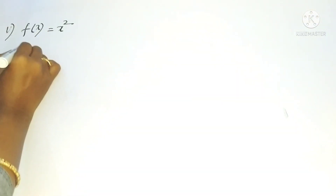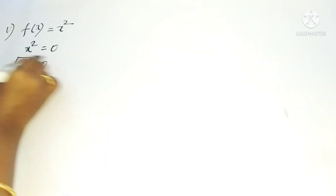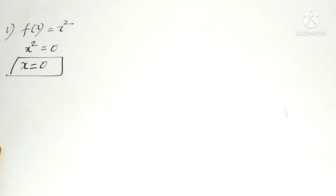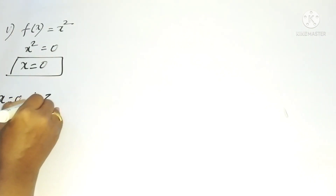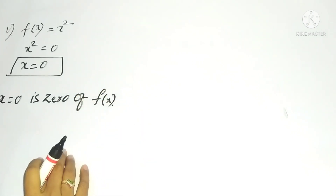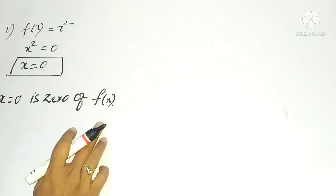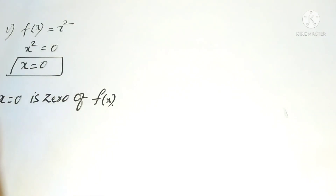The fifth problem: f(x) = x². Take the polynomial and equalize to zero. If x² = 0, then x = 0. So x = 0 is the zero of the polynomial f(x). Remember, the zero of a polynomial is the value for which the polynomial equals zero.